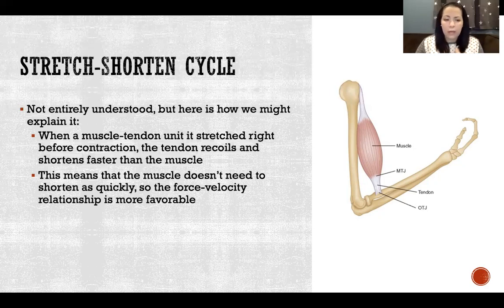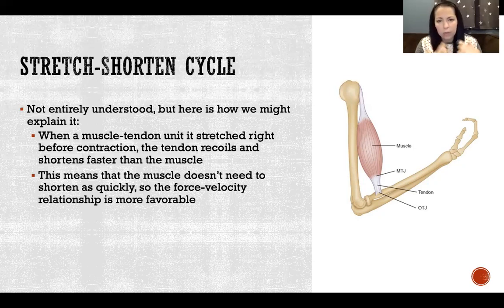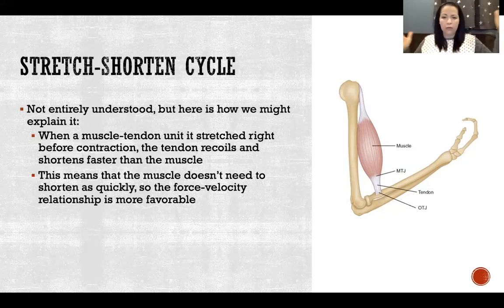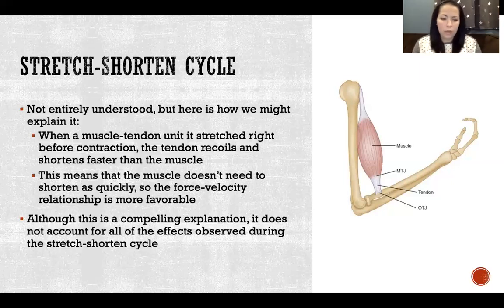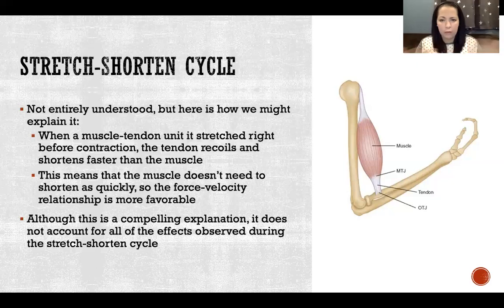That also means that the muscle during the concentric contraction won't be quite as affected by the force-velocity relationship, because the tendon is recoiling fast enough that the muscle doesn't need to contract as fast — doesn't need to shorten as fast — for the whole muscle-tendon unit to shorten. Because the tendon was stretched and is quickly rebounding, that takes up some of the slack so the muscle has the chance to contract a little more slowly. The more slowly the muscle contracts, the more cross-bridges it can form and the more force it can produce.